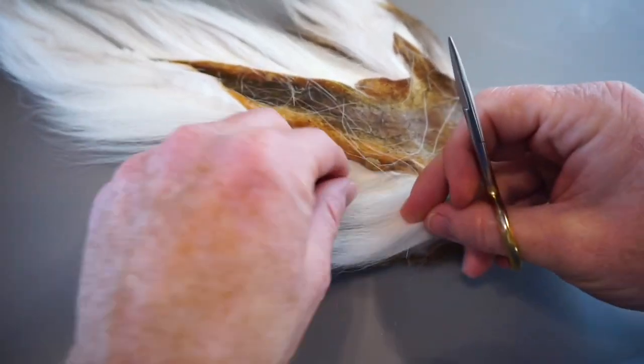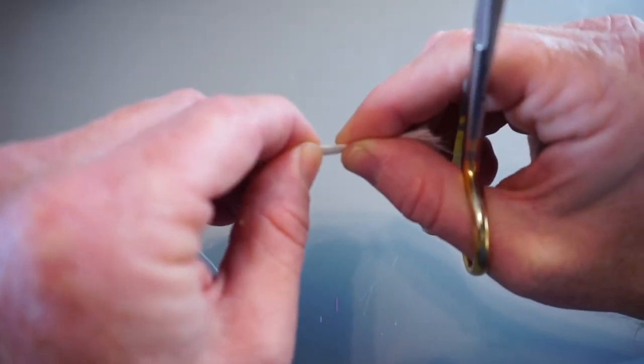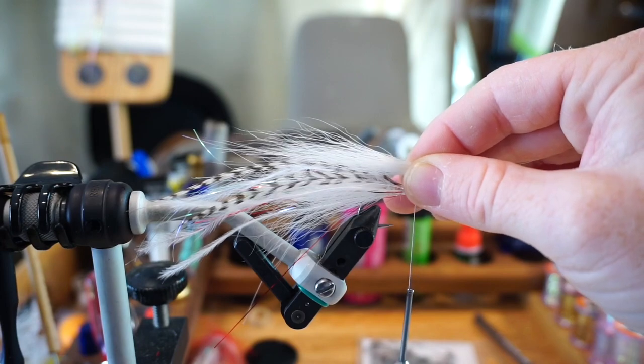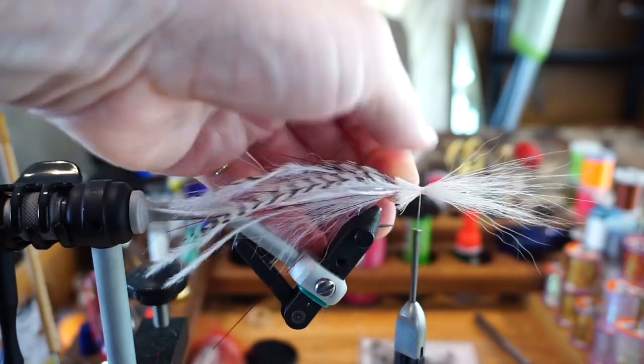So for the next part, we're going to want to use something a little further down as it'll flare more. So again, pinch the tip, pull out all the under fur. Basically tie this in the same way as the last bucktail clump. However, don't tie up over it and make sure it still flares out slightly.